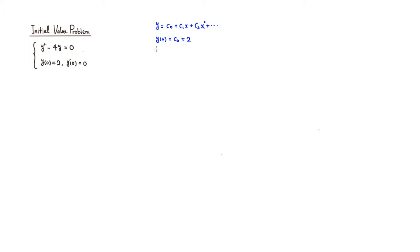Now look at y prime, which is the derivative: c1 plus 2c2x plus 3c3x squared, and so on. If you look at y prime of 0, all you get is c1. Since y prime(0) must equal 0, these two initial conditions give us c0 equals 2 and c1 equals 0.